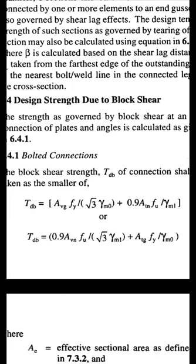Combining all four modes — shear yielding, shear rupture, tension yielding, and tension rupture — the two equations are formed. In TDP1: AVG × Fy is shear yielding, and ATN × Fu is tension rupture. In TDP2: AVN × Fu is shear rupture, and ATG × Fy is tension yielding. The unknowns are AVG, AVN, ATG, and ATN.